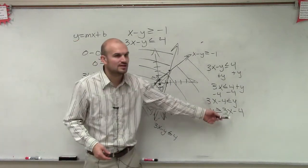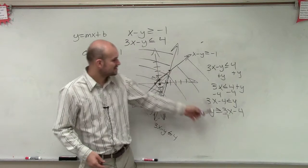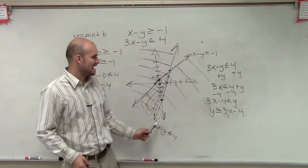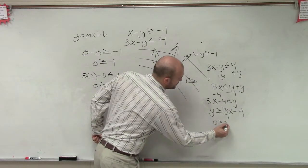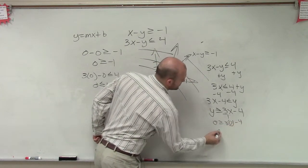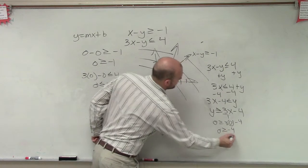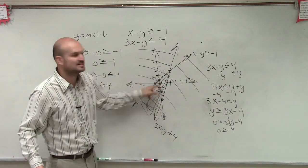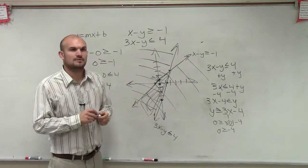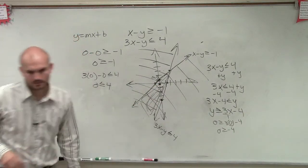And then once you have your equation, since it's greater than or equal to, it's a solid line. And then you just test it. Plug it in. 0 is greater than or equal to 3 times 0 minus 4. 0 is greater than or equal to negative 4. That's true. So since it's true, you shade above the line because 0 is above the line. Make sense a little bit? Okay.